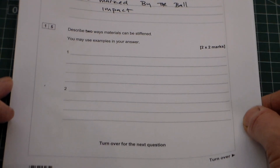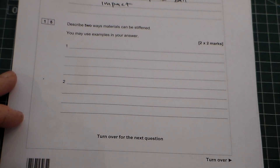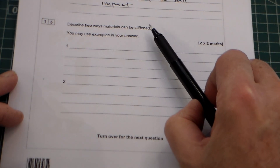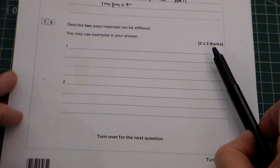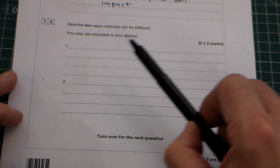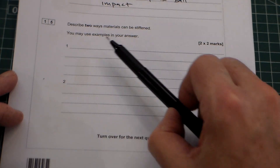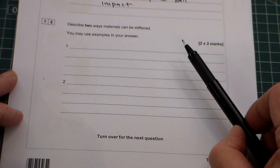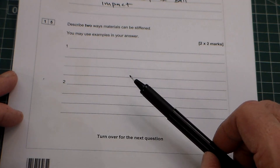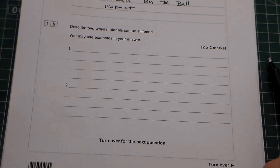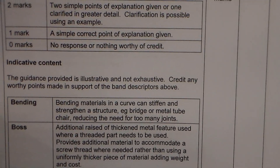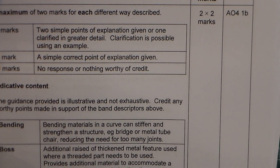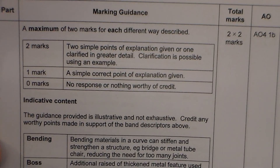Question 15 says: describe two ways in which materials can be stiffened. You may use examples in your answer. So we've got two times two marks. Two marks tells us we don't want a one-word answer — we want a sentence, and since it says use examples, we really want to give two methods and two examples.